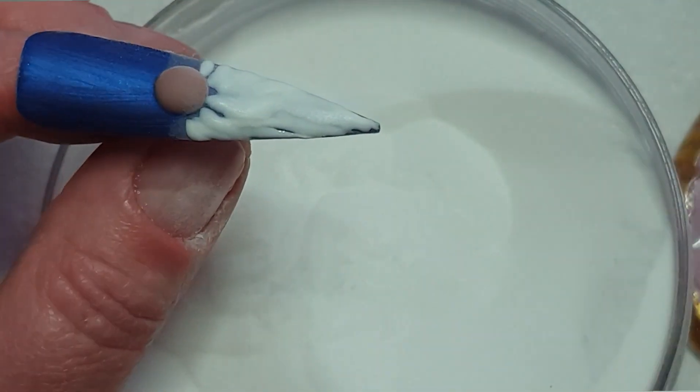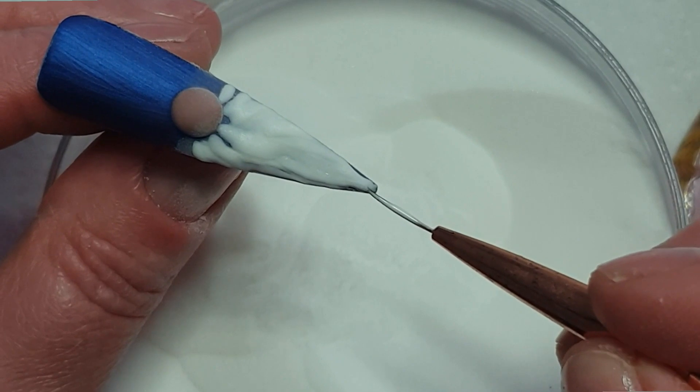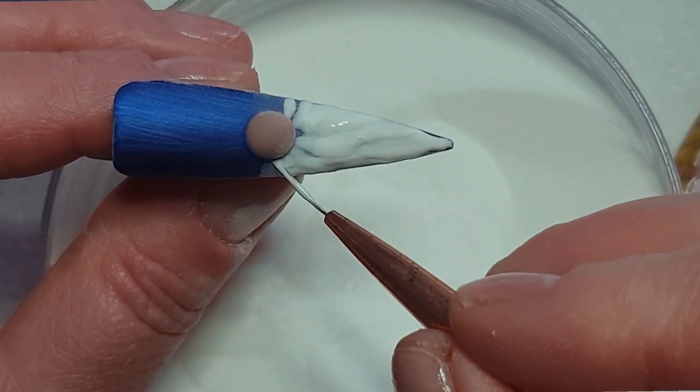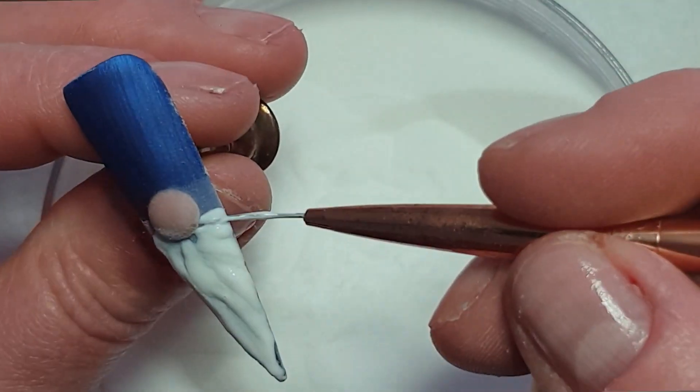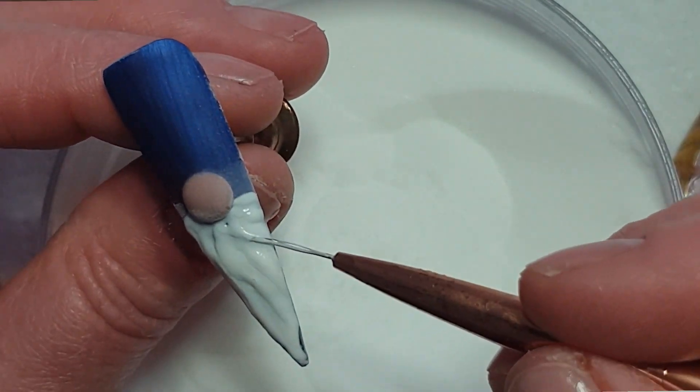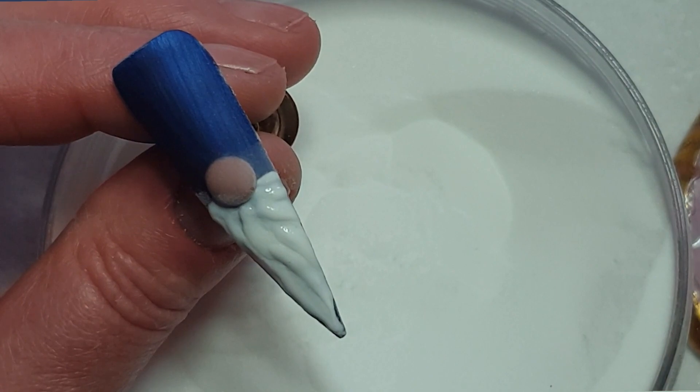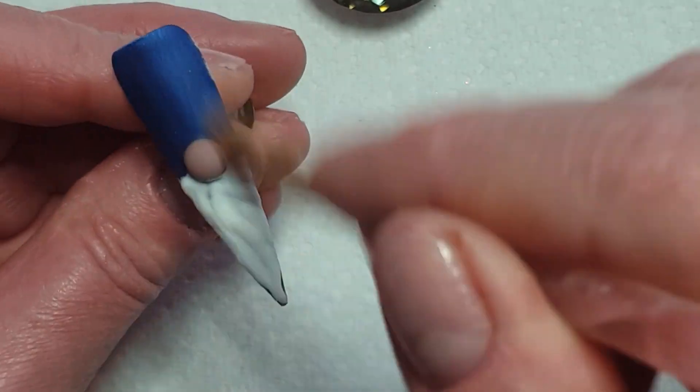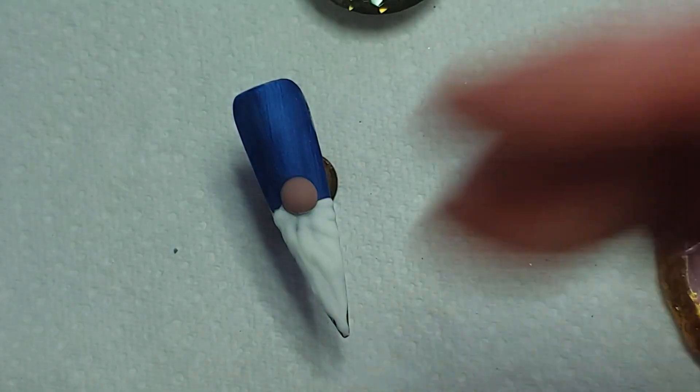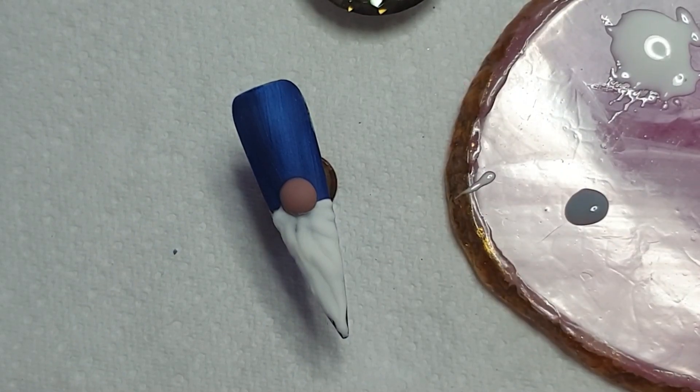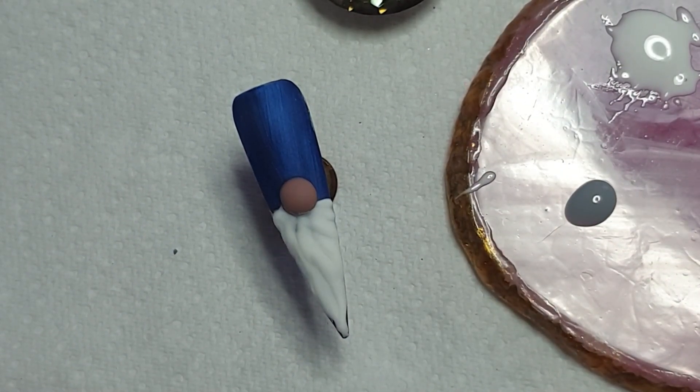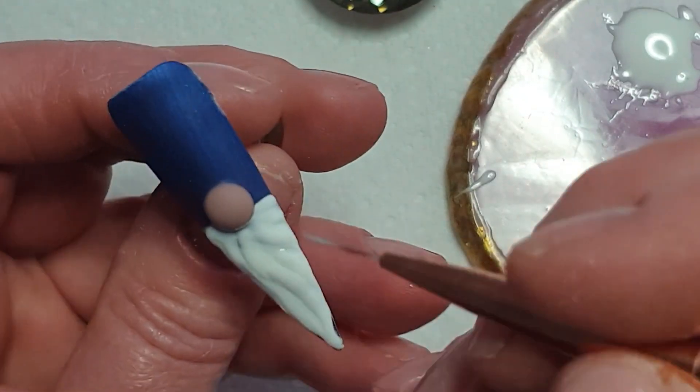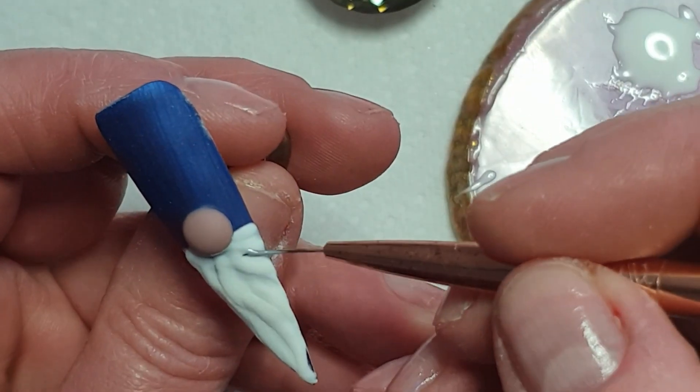I'm brushing off any excess acrylic. And then I'm going in with this grey, a gel polish. And I'm just doing that in the dips in the design just to give it some shadow and dimension, make it stand out.